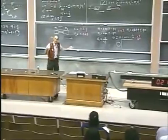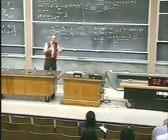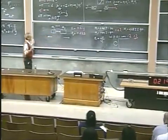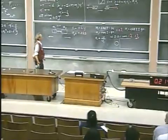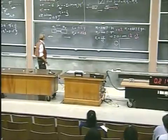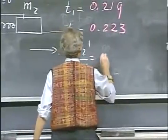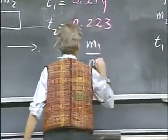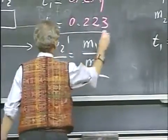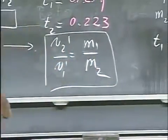The momentum before is zero. I burn the wire, momentum afterwards is also zero. But the velocities... v2 prime divided by v1 prime equals m1 divided by m2. And so twice the mass will get half the speed.